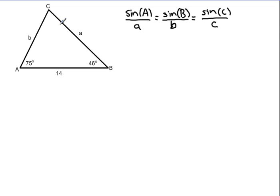We know that the three interior angles of a triangle need to sum to 180 degrees. So subtracting 75 and 46 away from 180, we're left with 59 degrees for our angle C.